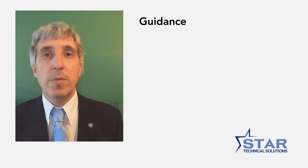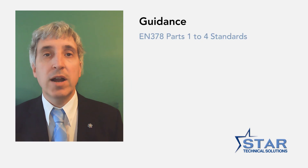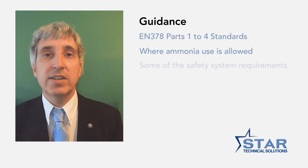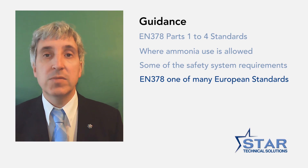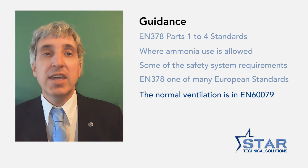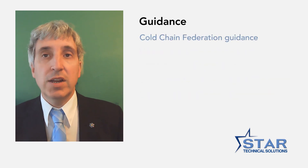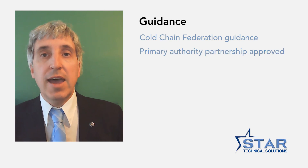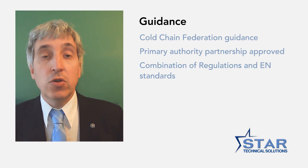Whilst the regulations give the broad requirement that equipment in the workplace should be safe, there is also industry guidance. The European and UK recognised published guidance is EN 378, which has four parts. The EN 378 standards are very broad and focus on the design of refrigeration systems, detailing where and where not ammonia use is allowed and providing some of the requirements of the safety systems. However, EN 378 is only one of many European standards for refrigeration systems. For example, EN 378 does not deal with the normal ventilation requirements for ammonia systems and points to other European standards EN 60079 for classification of places. The Cold Chain Federation has produced ammonia guidance for the industry and its primary authority partnership approved guidance combines the UK regulatory requirements and European guidance. The guidance documents are free of charge and are available on the Cold Chain Federation website.